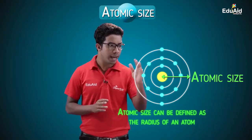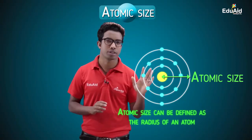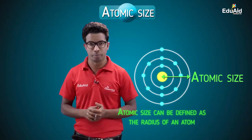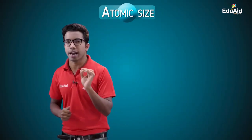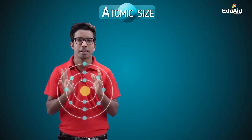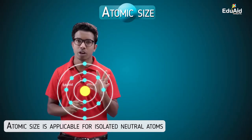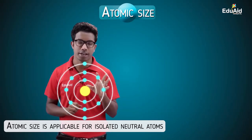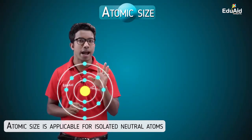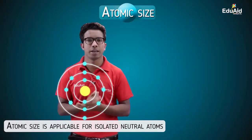So it is a distance — from the center to the outermost shell where electrons are present in an isolated atom. An isolated atom means the atom is single; it is not in combination with any other atom, and it is in neutral form with no charge on it. This atomic size concept is applicable when the atom is single and neutral.